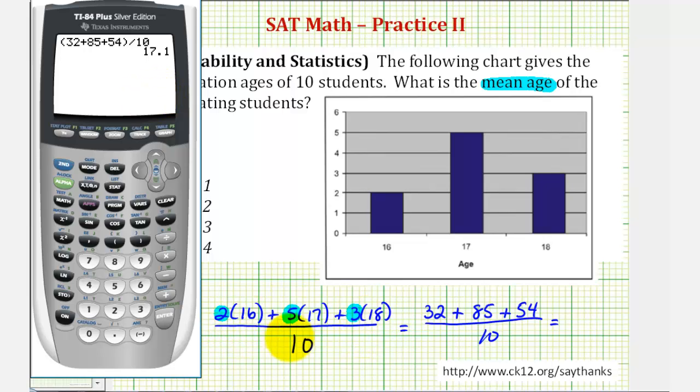Now we could have typed in the original expression here. Let's go and show that as well. We have two times sixteen, plus five times seventeen, plus three times eighteen. All this is in parentheses, and then we divide by ten. Of course the result is the same, seventeen point one.